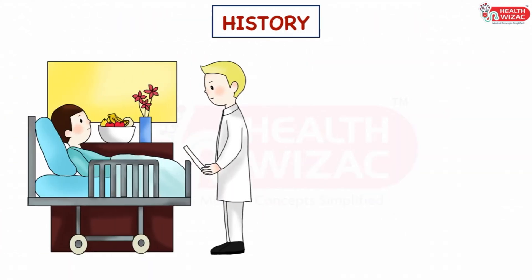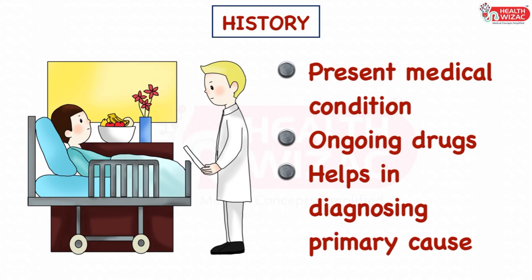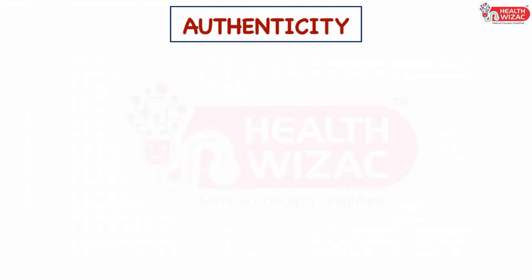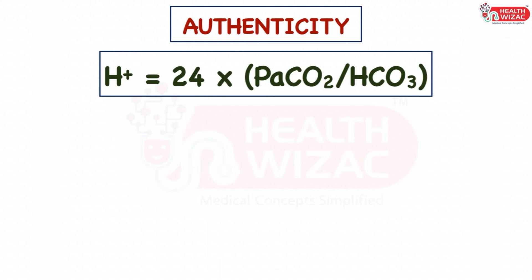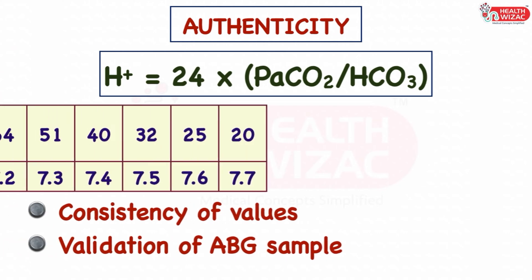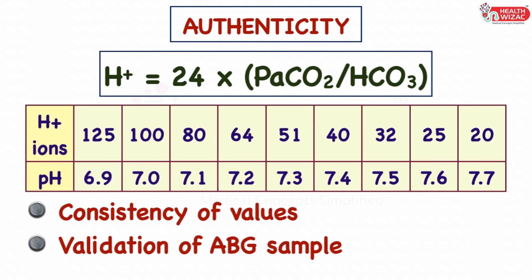Step 1 is history. History gives us insights about the underlying clinical condition and ongoing drugs of the patient, which helps in diagnosing the primary cause. Step 2 is to check the authenticity of the sample. Authenticity is checked by the equation: H+ ions equals 24 multiplied by PaCO2 divided by bicarbonate. This checks the consistency of ABG values. If the H+ ion value matches the pH range in the chart, the sample is labeled as authentic.